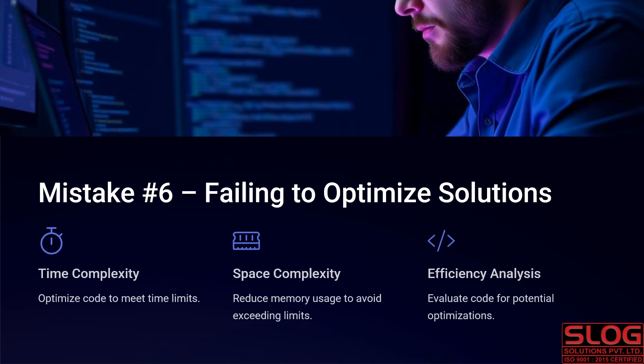Mistake number six is failing to optimize solutions. There are three aspects: time complexity, space complexity, and efficiency analysis. Time complexity means your code must run within a given time limit, so you must optimize accordingly. Space complexity means using only the allowed storage — avoid exceeding the memory limit. Efficiency analysis means making your code more and more efficient so the solution keeps getting better.